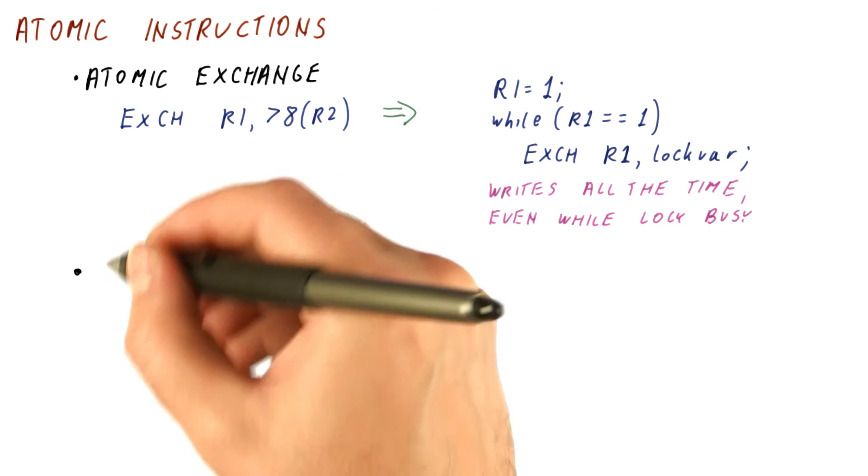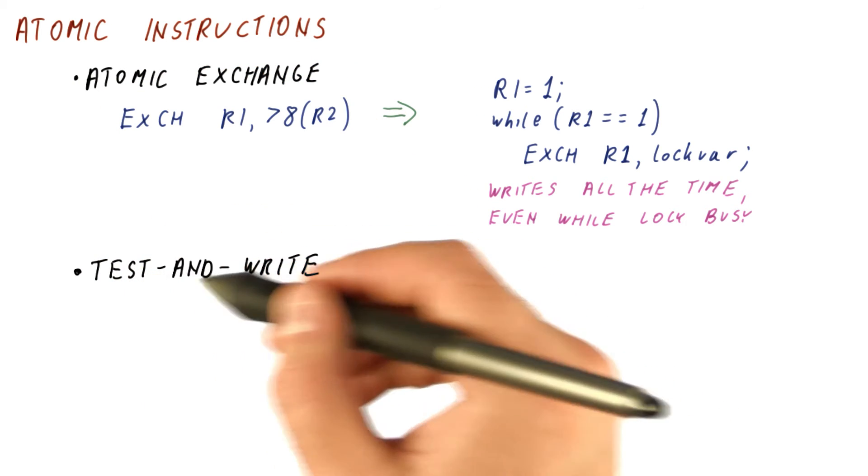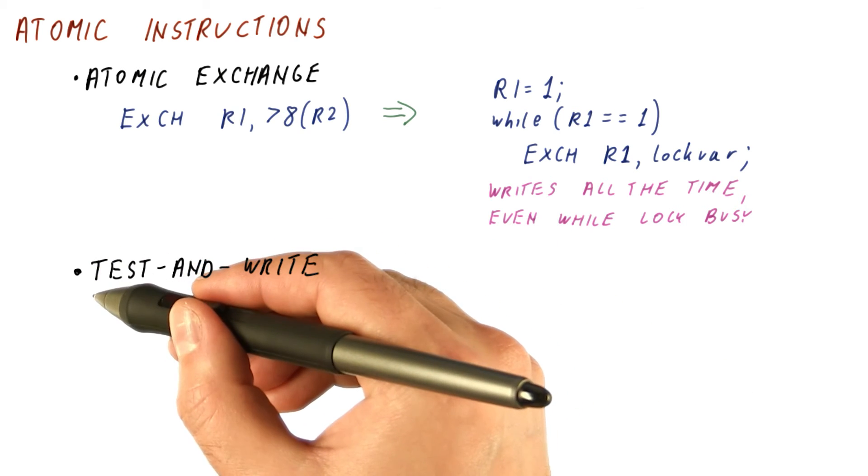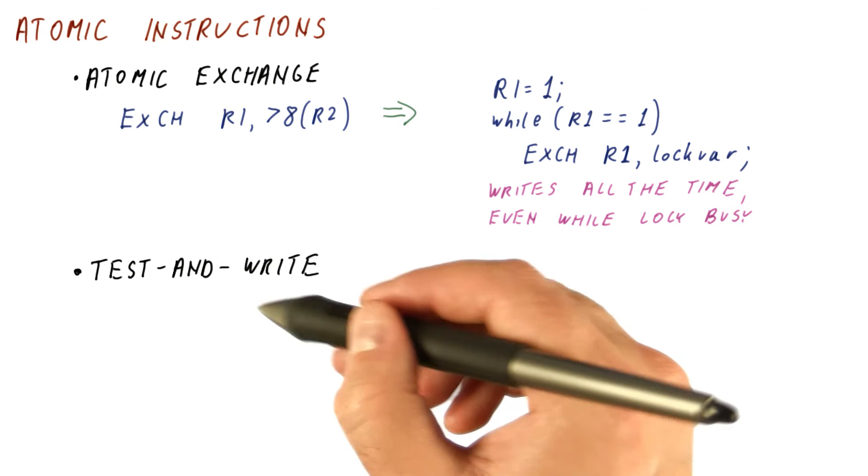So the second main type of atomic instructions is a whole family of things that can be classified as test and then write. So the idea is that we test the location, and if it satisfies some conditions, then we're going to write, but we don't write all the time.